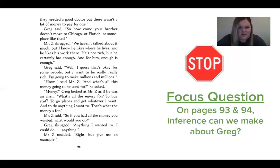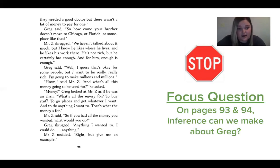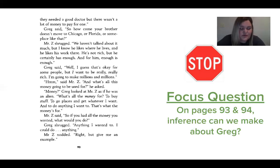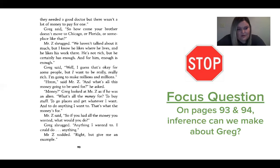Greg said, 'How come your brother doesn't move to Chicago or Florida or someplace like that?' Mr. Z shrugged. 'We haven't talked about it much. But I know he likes where he lives and he likes his work there. He's not rich, but he certainly has enough. And for him, enough is enough.' Greg said, 'Well, I guess that's okay for some people. But I want to be really, really rich. I'm going to make millions and millions.' Mr. Z asked, 'And what's all this money going to be used for?' Greg looked at Mr. Z as if he was an alien. 'What's all the money for? To buy stuff? To go places? And get whatever I want? And to do anything I want to?'